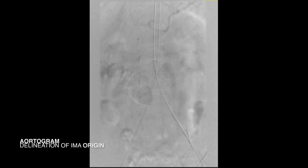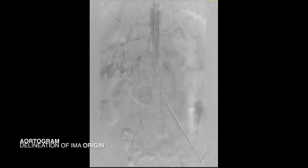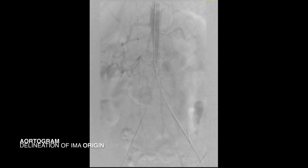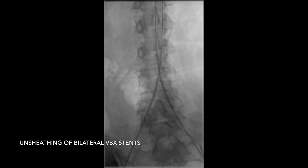An abdominal aortogram was then performed via our bilateral 7 French sheath accesses to delineate the infrarenal abdominal aorta and origins of the renal arteries and inferior mesenteric artery, with the goal of preserving the inferior mesenteric artery during stent deployment. Pre-operative CTA imaging demonstrated bilateral common iliac arteries.